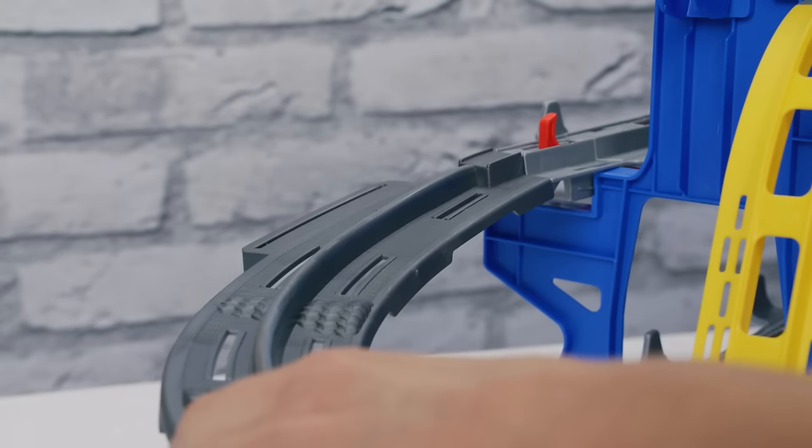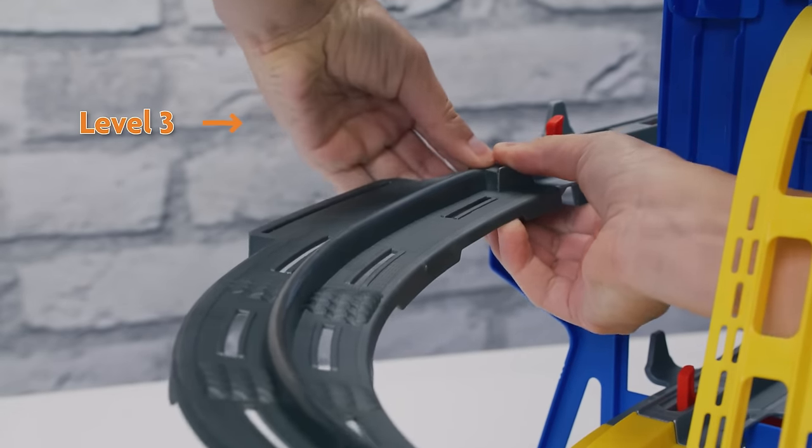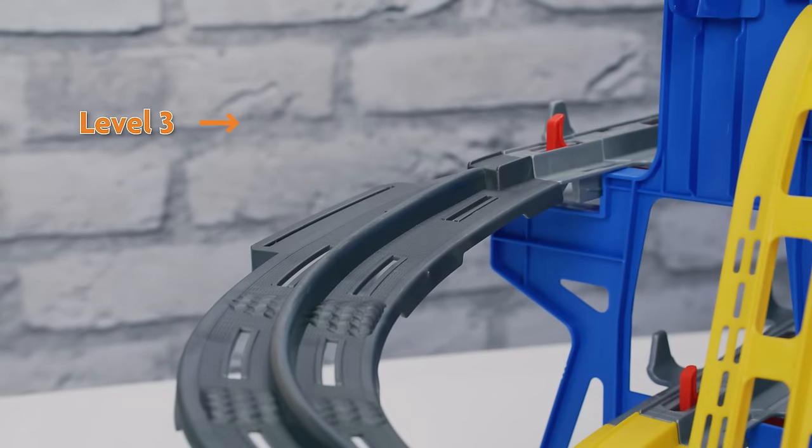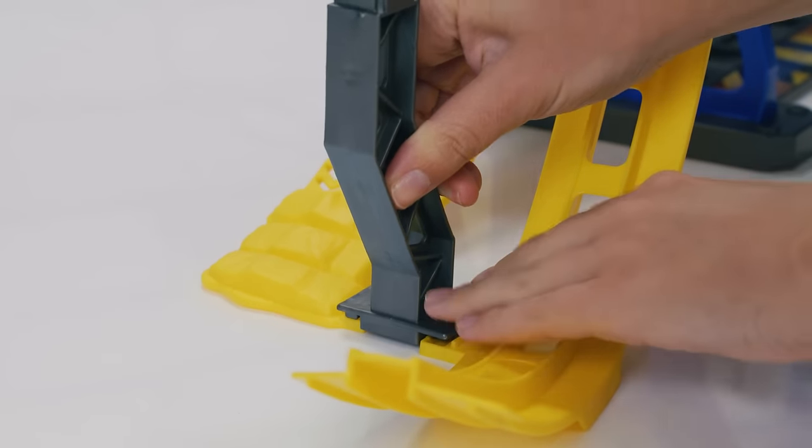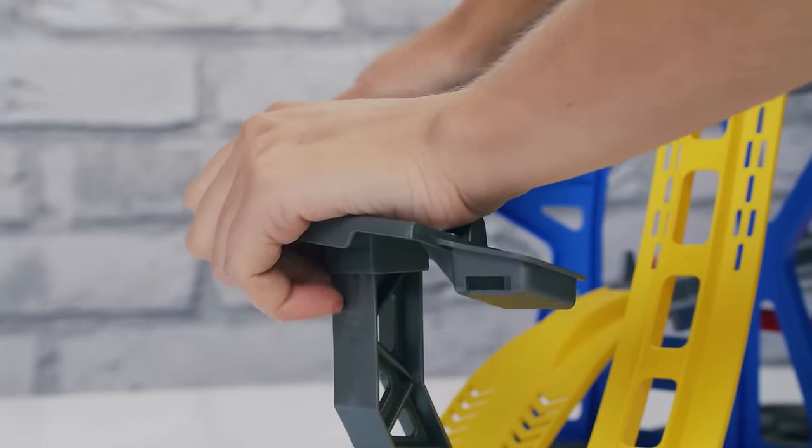Now add the curved test track. First, add the top piece of the test track to the third level. Next, add the test track support by connecting one end to the underside of the test track and the other end to the Big Air Jump connection point.